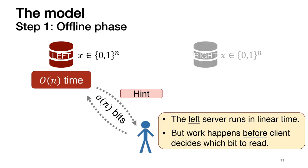Let's start by defining the model. For simplicity, we will be working in the two-server setting, and we will refer to our two servers as the left server and the right server. Crucially, we assume that the two servers are non-colluding, meaning that the adversary controls at most one of the two servers. Our schemes start with an offline phase. In the offline phase, the client interacts with the left server, who provides it with a hint, which is a string that depends on the database itself. The length of the hint has to be sub-linear in the database size, as otherwise the hint could just be the entire database. In our constructions, the hint will be about square root n bits in length.